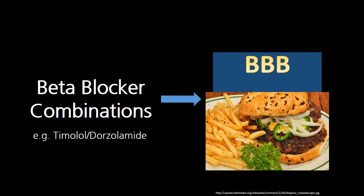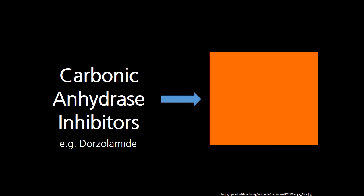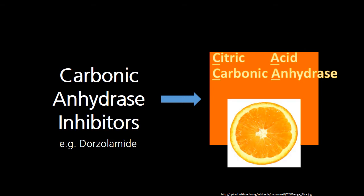Speaking of carbonic anhydrase inhibitors, those are orange. And this may be a stretch, but when I look at the word carbonic anhydrase inhibitor, I see the first two initials, CA, as being the same letters that might serve as initials for citric acid. And I most commonly associate citric acid with oranges. So there you go. That's going to represent your dorzalamide, your brinzalamide, your carbonic anhydrase inhibitors.